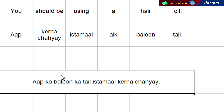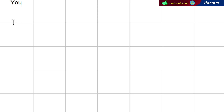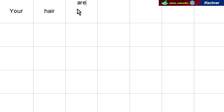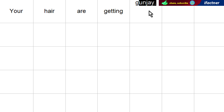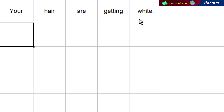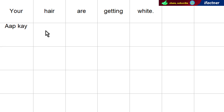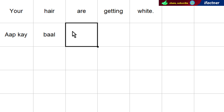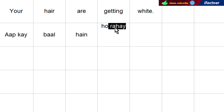Or after the haircut, the barber may say your hair are getting grey or getting white. 'Your hair' is 'aap ke baal', 'are' is 'hain', 'getting' is 'ho rahe', 'white' is 'safaidh'. So: 'Aap ke baal safaid ho rahe hain.'